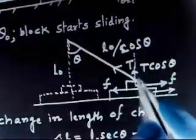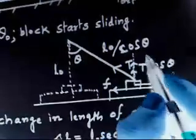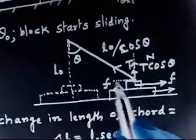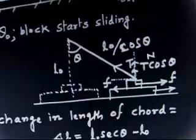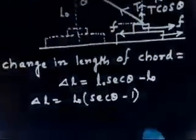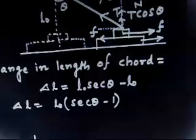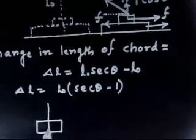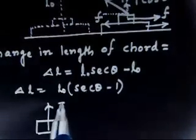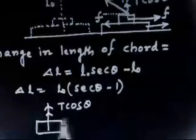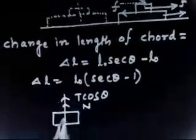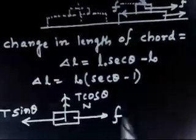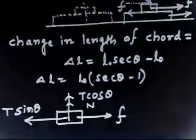There is also a normal reaction acting on this block. Making the free body diagram of the block: there is a force T cosθ acting upward, a normal reaction, T sinθ in the horizontal direction, and the friction force. This friction force is very important to consider here — it is static in nature.